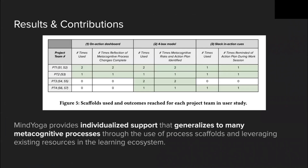In our two-week pilot study, we found that when the process scaffolds were used, students were able to reach reflection outcomes for each of the three stages of the reflection process. In the on-action dashboard, students produced reflections about risks in their metacognitive processes. In the four-box model, students developed an action plan leveraging mentor feedback that addresses both metacognitive and practical risks. The in-action cues actively reminded students of their action plan during relevant work sessions.